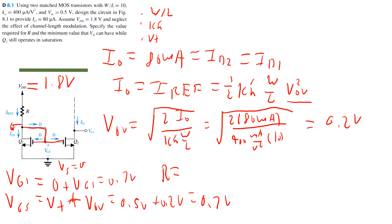So I can solve for R by setting it equal to the voltage at the top end of the node, which is VDD, subtracting it by the voltage at the other node, VG1, and dividing it by IREF. Or 1.8 volts minus 0.7 volts divided by 80 microamps. This equals 13.75 kilo ohms.